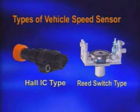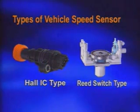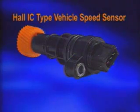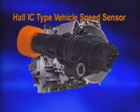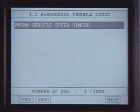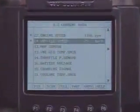There are hall IC type and reed switch types in the vehicle speed sensor. The hall IC type vehicle speed sensor is located on the differential gear housing. It monitors the output speed of the transaxle and can be checked by fault codes and current data.